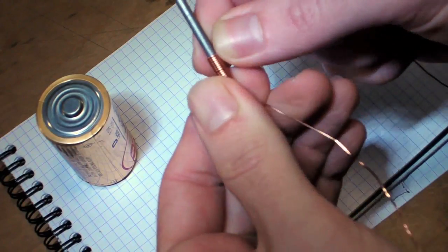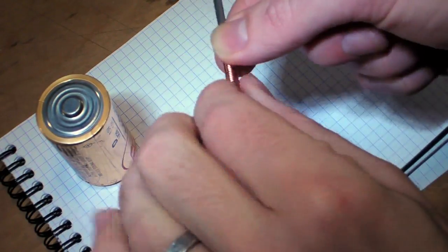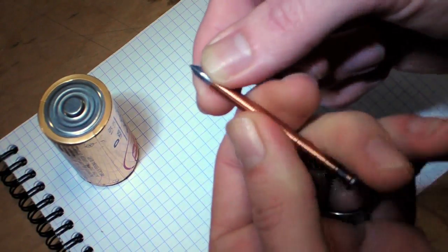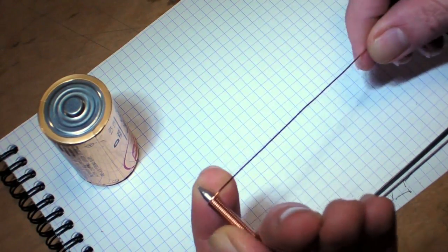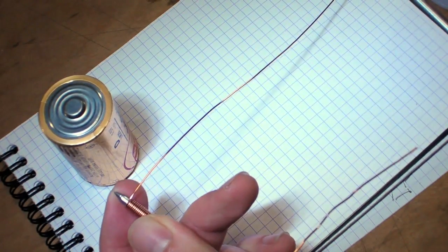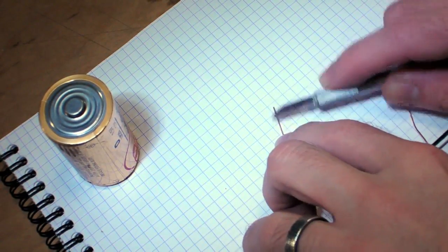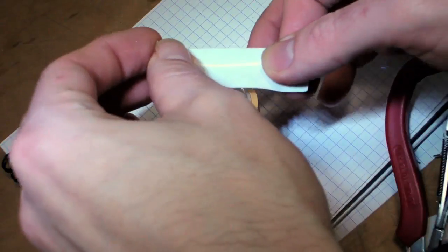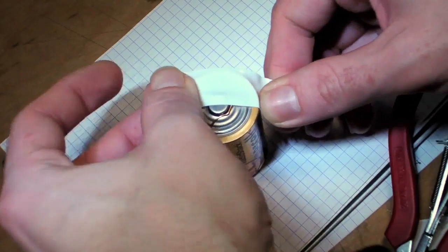Keep working your way down until you've covered most of the nail. The more windings you use, the stronger the electromagnet will be. Once you're done, pull a length off to connect to our battery. Strip off the ends, make sure that I can get good contact, connect to the D-cell battery.